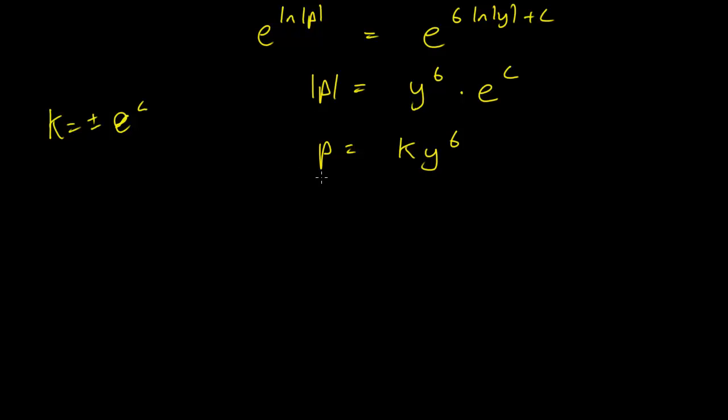Okay, not too important, but we have p equals ky to the 6 and that's our general solution in terms of p. We of course have to find a solution in terms of y.